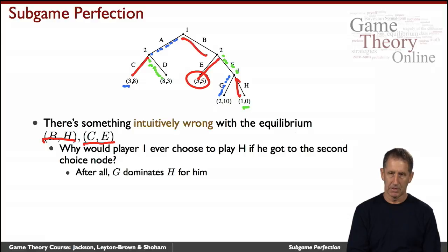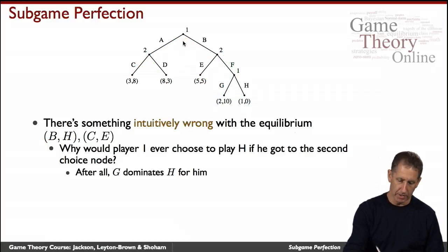But there's something a little disturbing about this equilibrium. Let's focus on this node right there. Why would Player 1 actually do H? Because G dominates it. In G, they get a payoff of 2 rather than 1. Even though it did lead to a Nash equilibrium, there's something a little troubling about it.